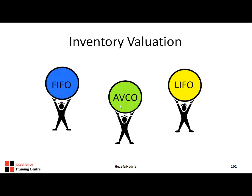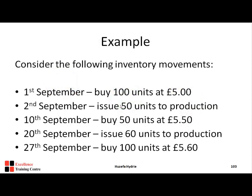In the weighted average method, we mix all the raw material together and issue units at the average price — we do not identify them as first or second purchase. Since it can be difficult to understand through theory alone, let's work through an example. Consider the following inventory movements: on 1st September there is no opening inventory; we buy 100 units at £5. On 2nd September, 50 units are issued to production. On 10th September, 50 units are bought at £5.50. On 20th September, 60 units are issued to production. On 27th September, 100 units are bought at £5.60.